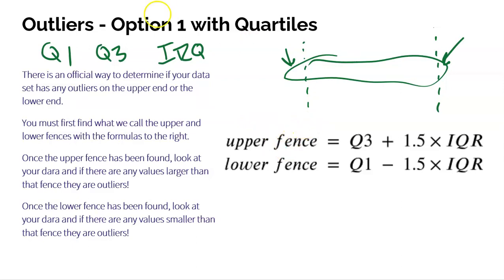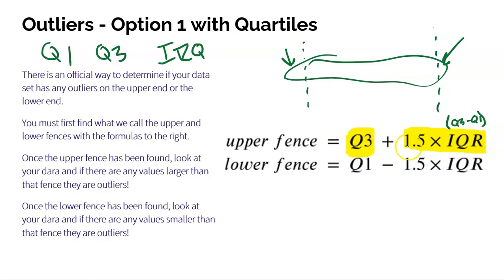Look how simple this is. The upper fence is found by taking the third quartile and adding 1.5 times the IQR. Don't forget the IQR is found by simply doing Q3 minus Q1. This results in a value, and you're going to look at your data and ask: are any individual data values bigger than the upper fence? If the answer is yes, those values are outliers — upper outliers.